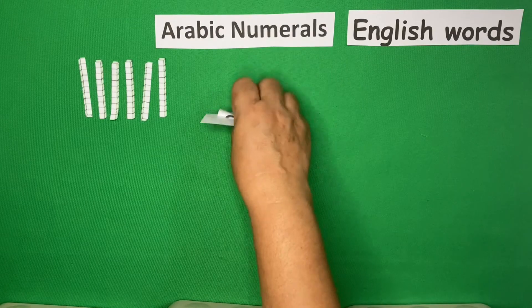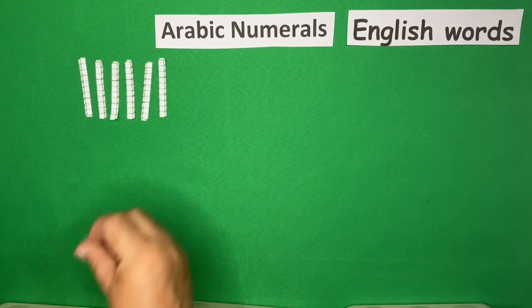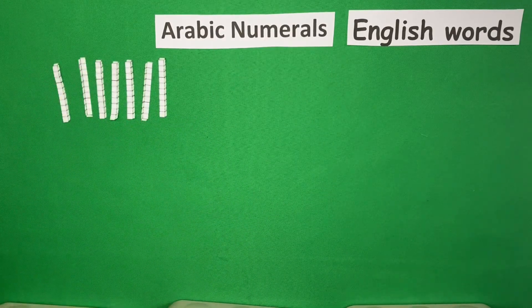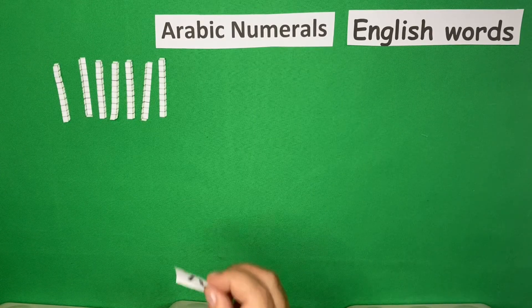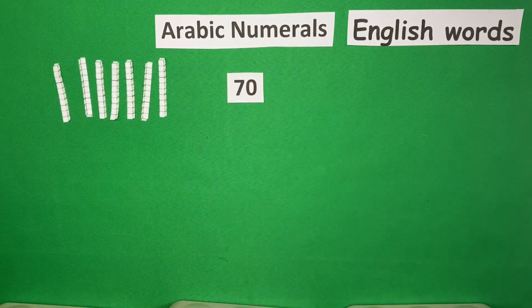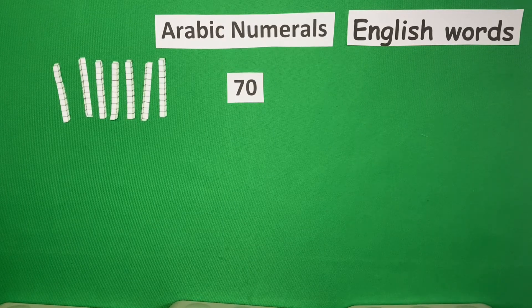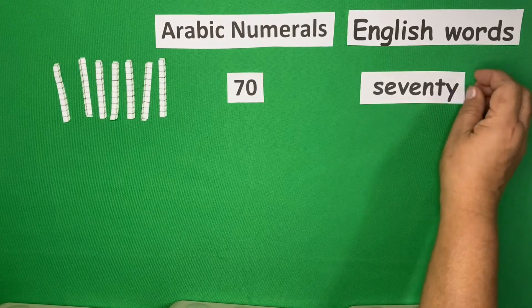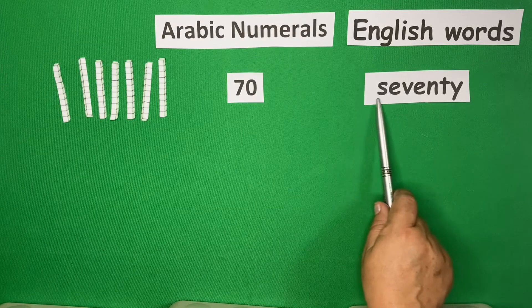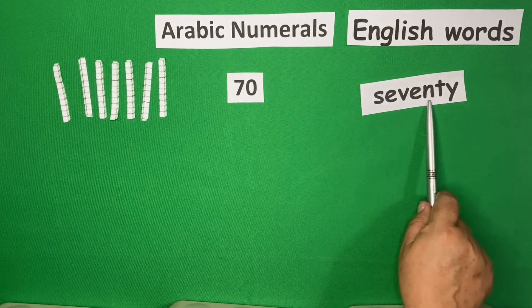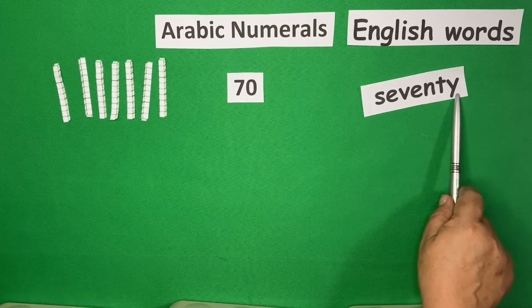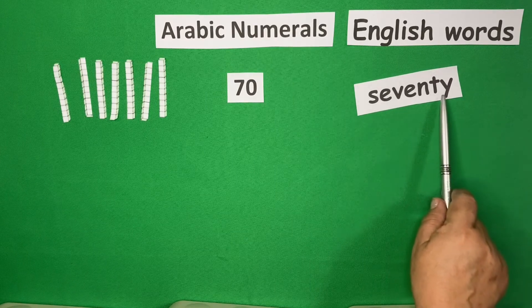Then, we will add another 1. So, now, we have 7. And this is 70. To write this in English, it's like this. You will first write seven, S-E-V-E-N, and then T-Y, 70.